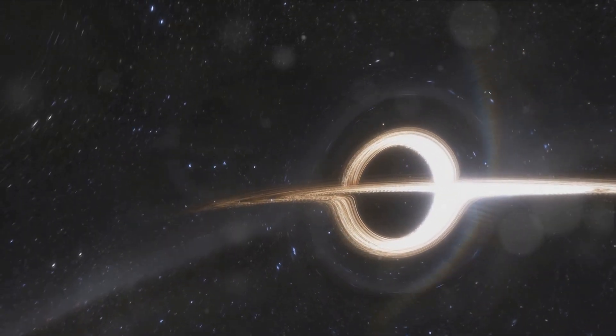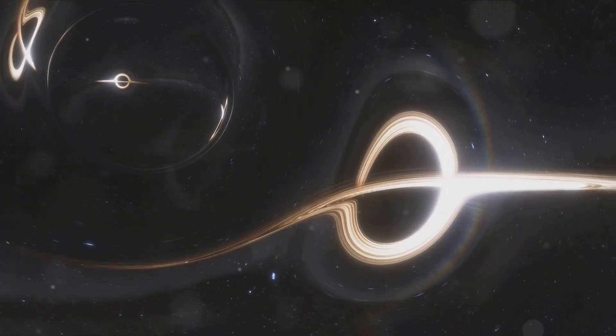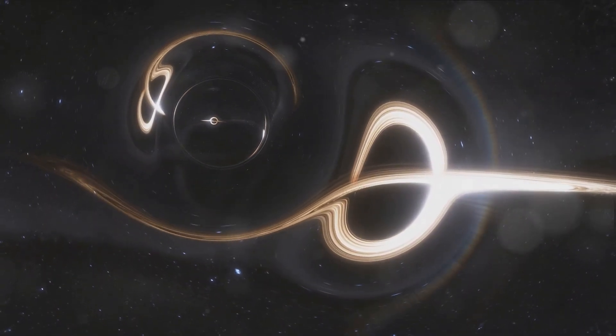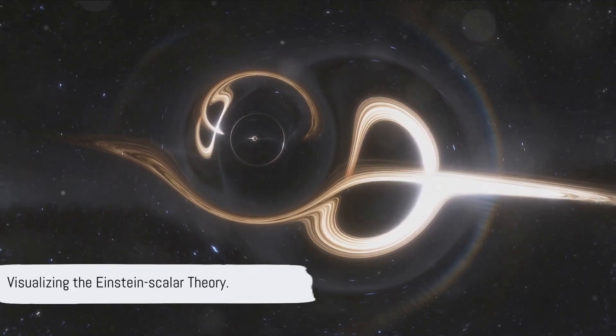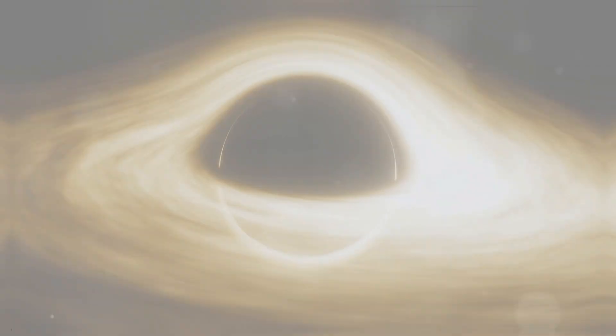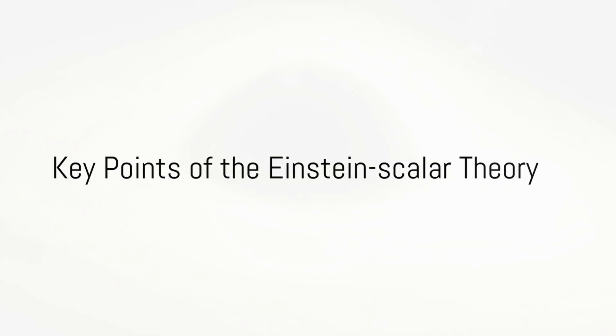It might even cause ripples that propagate outwards, akin to gravitational waves in our universe. That's a rudimentary way to envision the Einstein Scalar theory. What are the key points about the Einstein Scalar theory?